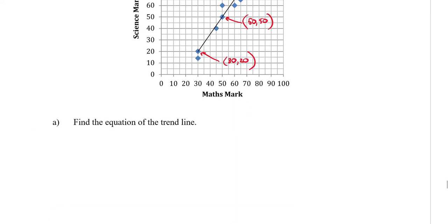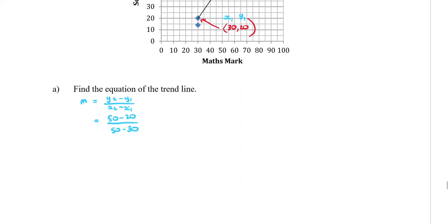Part a says find the equation of the trend line. I need to use the point-gradient formula, but first I need the gradient. So m equals y2 minus y1 over x2 minus x1. We'll label these x1 y1 x2 y2. That's 50 minus 20 over 50 minus 30, which simplifies to 3 over 2. I prefer not to go to a decimal knowing we need to keep going.